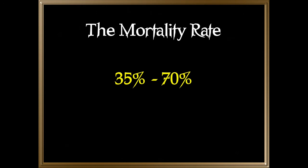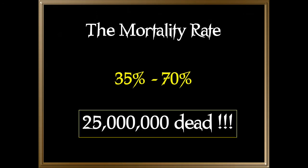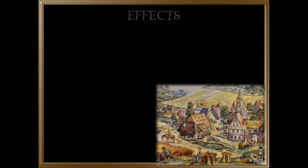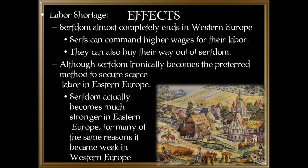The mortality rate was anywhere from 35% to 70%, with 25 million dead. The political, economic, and social effects of the Black Death included a labor shortage. Serfdom almost completely ended in Western Europe because of the Black Death — serfs could command higher wages and buy their way out of serfdom. Ironically, serfdom became the preferred method to secure scarce labor in Eastern Europe, actually growing much stronger there for many of the same reasons it became weaker in Western Europe.